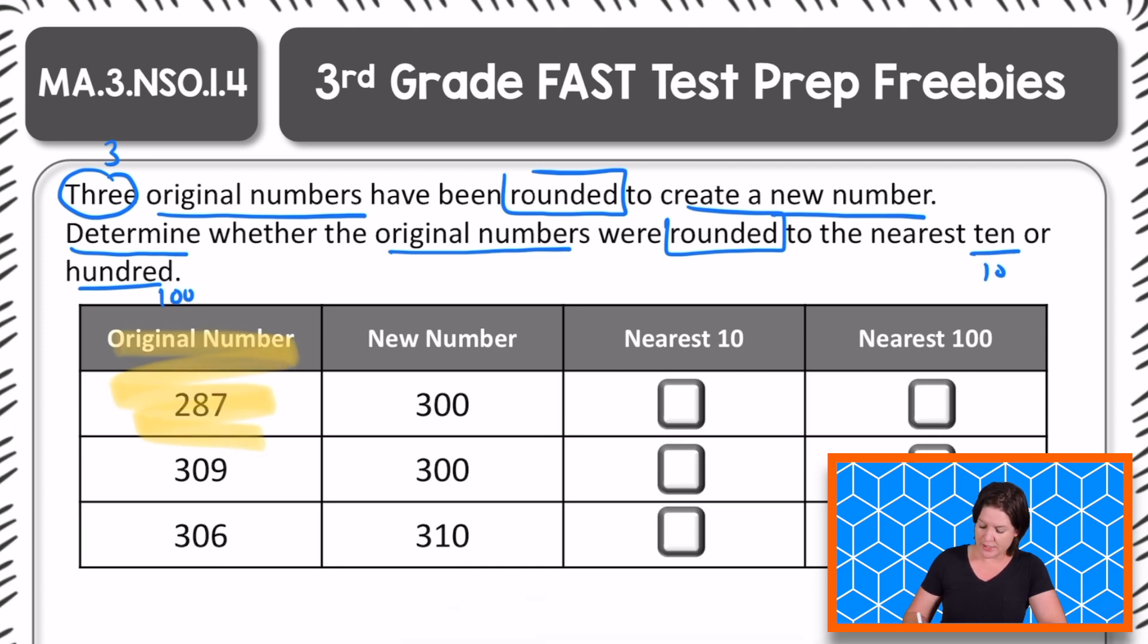So again, we have these numbers here. These are the original numbers. Each one of those has been rounded to a new number. So we have to go through and say, okay, 287 was rounded and now we have 300. Was that to the nearest 10? If so, we'll select the check mark there. Or is it to the nearest 100 that it was rounded to? So that's what we're doing today.